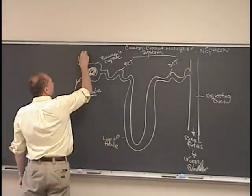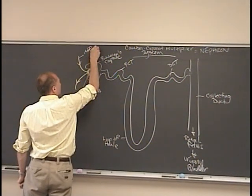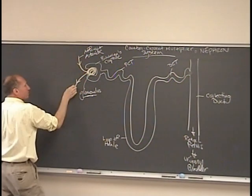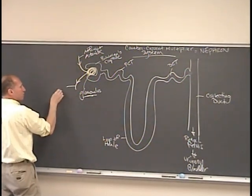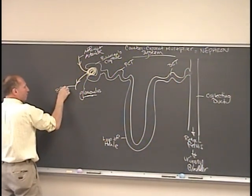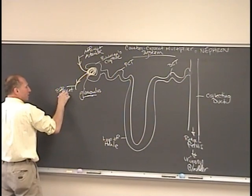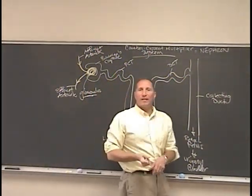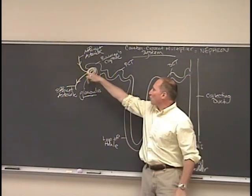We have this arteriole that leads into the glomerulus called the afferent arteriole. And then we have another one that leads out of the glomerulus, which is referred to as the efferent arteriole. These arterioles carry blood into this ball of capillaries called the glomerulus.